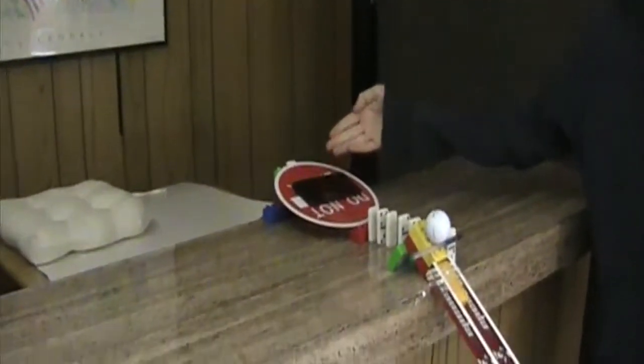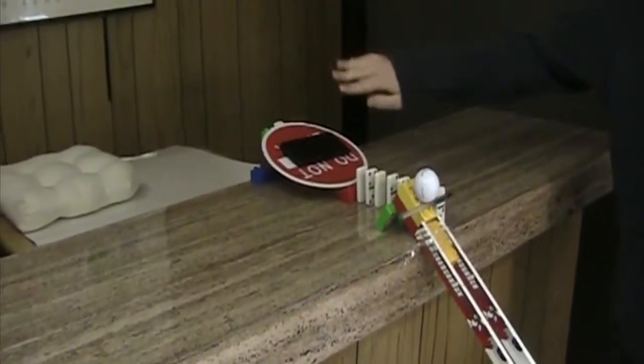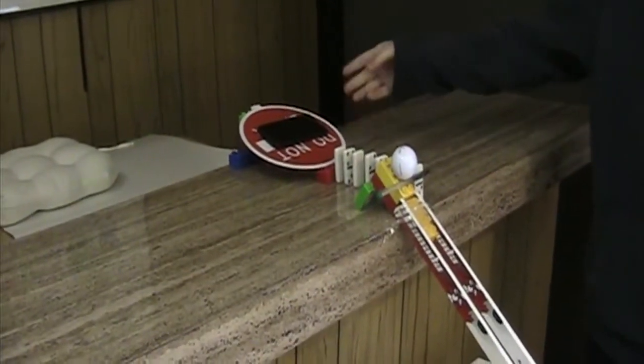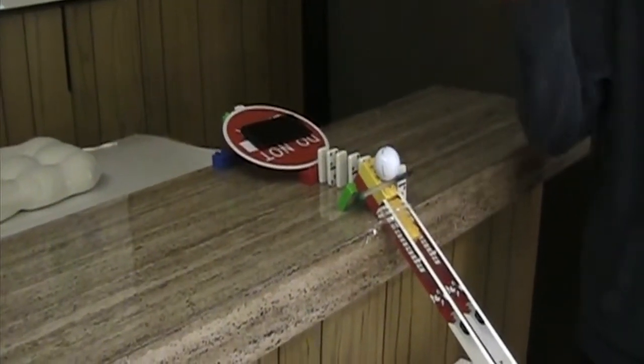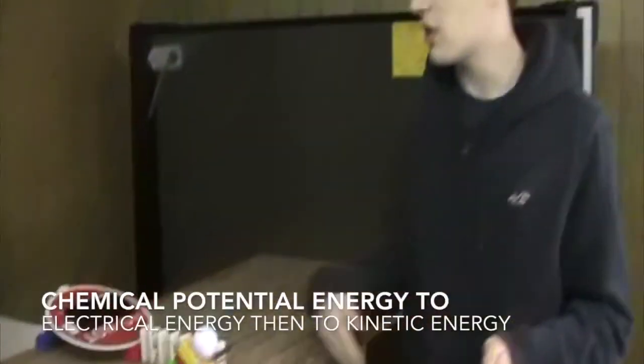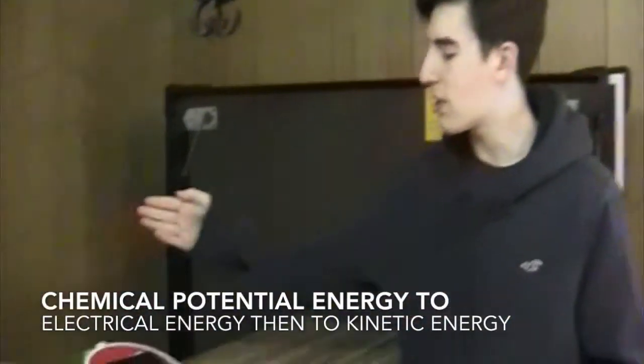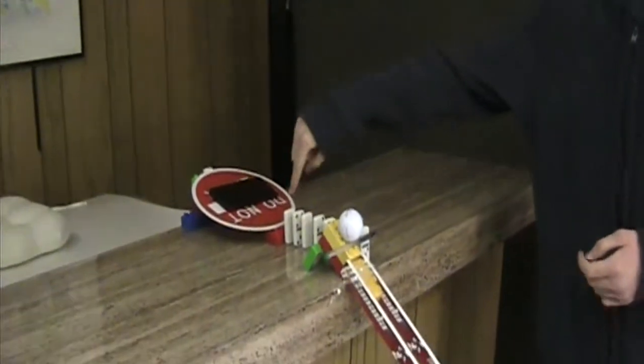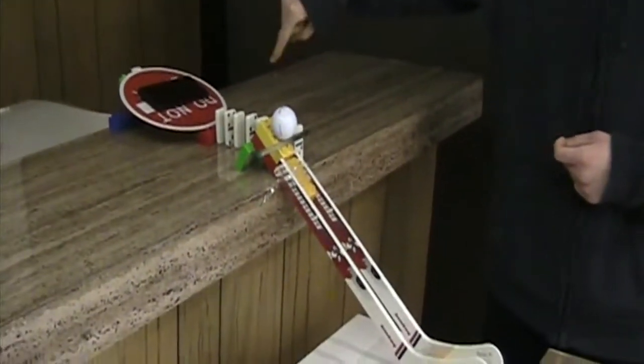So we start off with this cellular device, which will vibrate by converting the chemical potential energy into electrical energy, which will convert into kinetic energy, starting these dominoes going down.